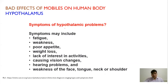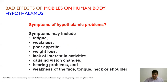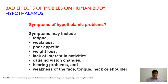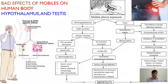What are the symptoms if the hypothalamus starts to behave abnormally? The symptoms may be fatigue, weakness, weight loss, lack of interest in activities, feeling unease, vision changes, hearing problems, and weakness in the face, tongue, neck, and shoulder. Those are various problems associated with this.